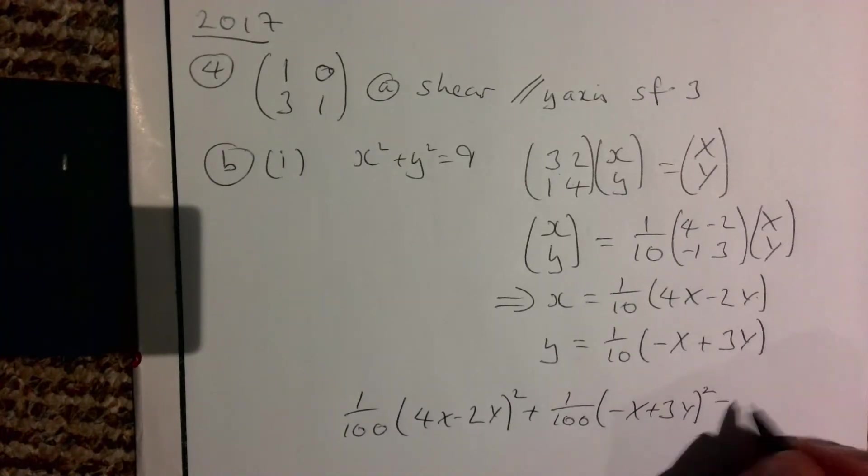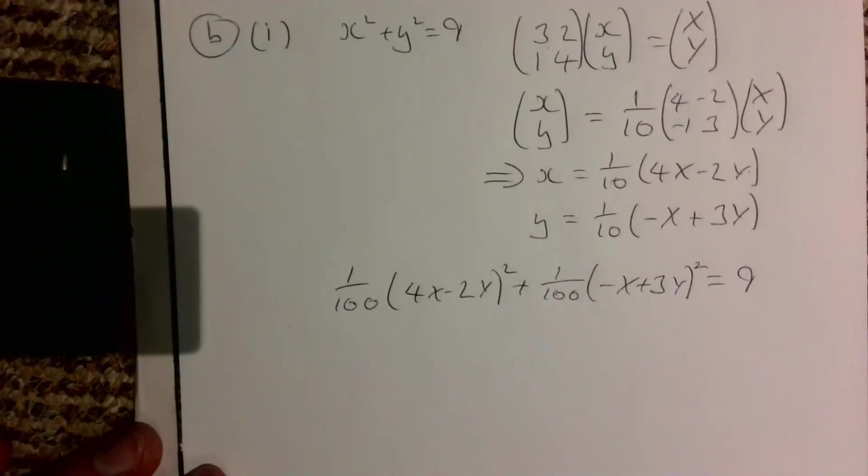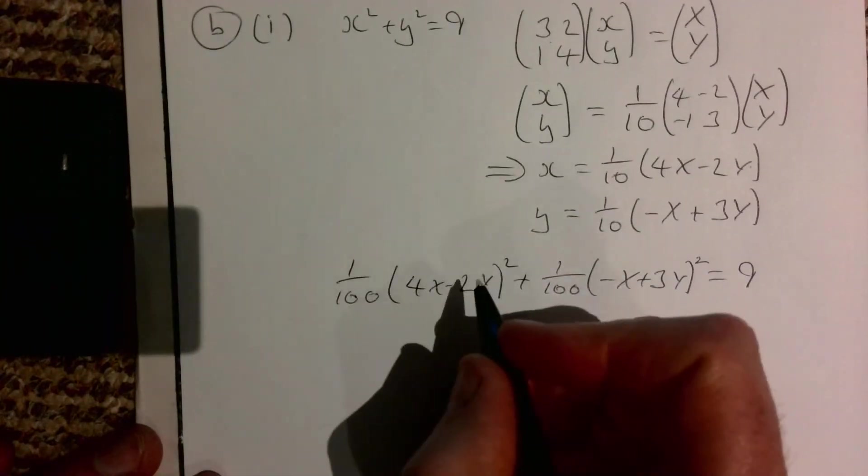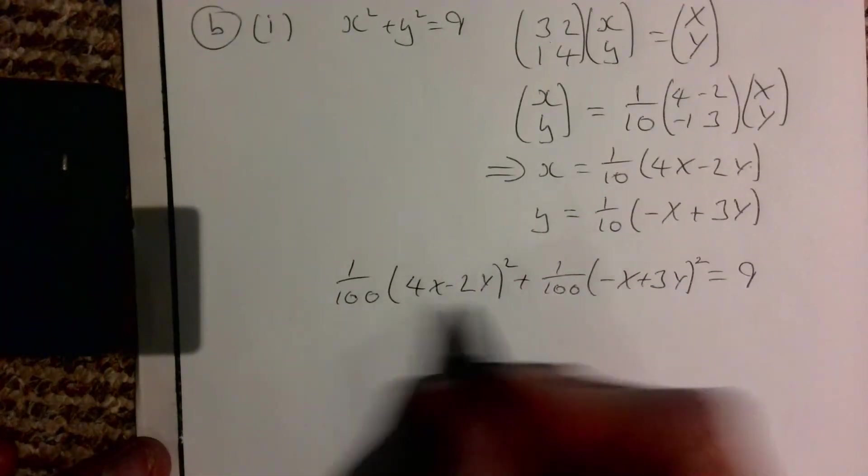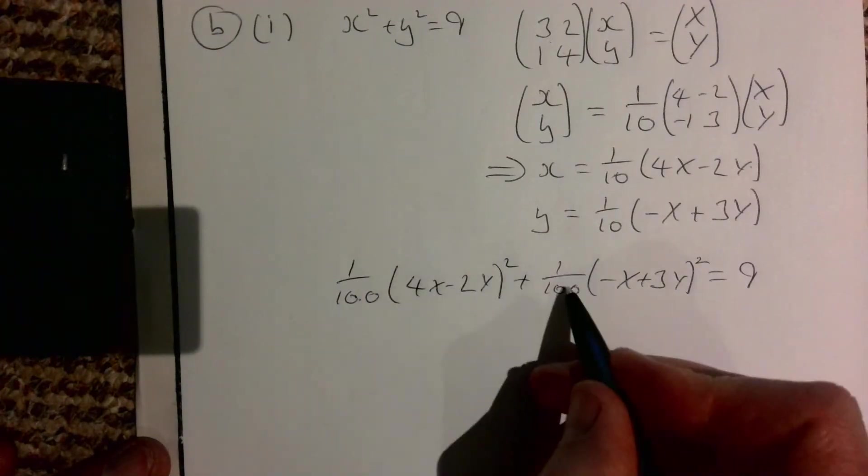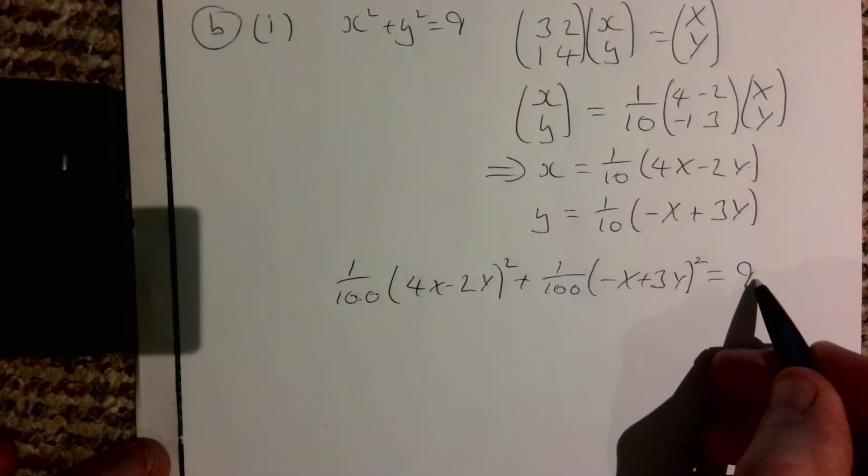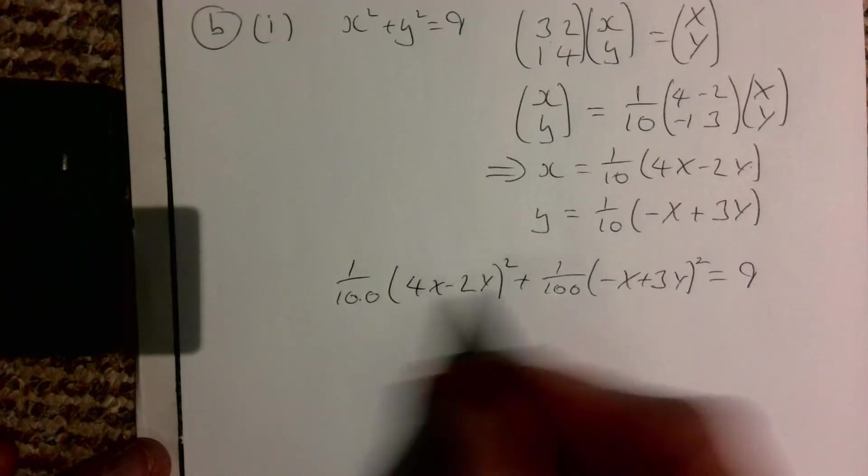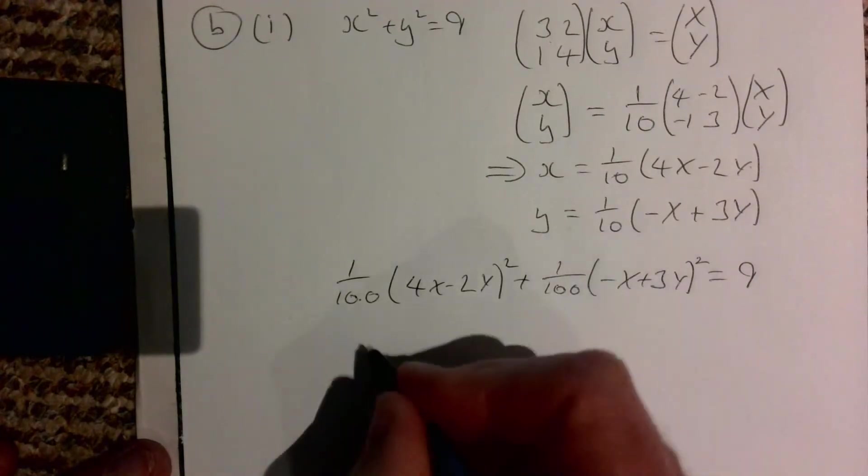And easiest thing to do here, I hope you agree, is to multiply through then by 100. So we're going to multiply through by 100. That's going to disappear, that's going to disappear, that's going to become 900. At the same time we're going to do FOIL for this and FOIL for this.